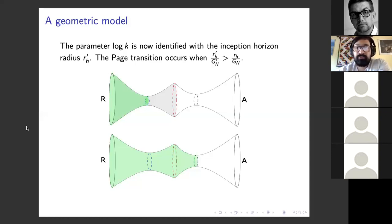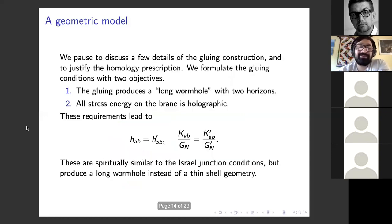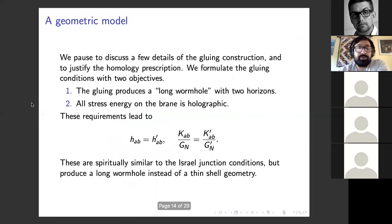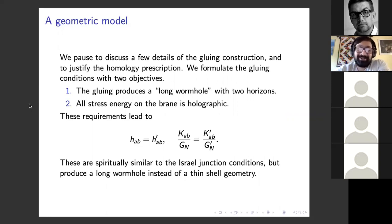That's the page transition in a very simplified model. So far this entire talk has been pictures, and I don't want you to think that the only thing we did in the paper was draw pictures — although when this project started we initially thought we were going to write a paper like that. We actually did do some calculations, so I'll quickly describe some of those. We're going to discuss a few details of the gluing construction and also justify the homology prescription as I promised earlier.